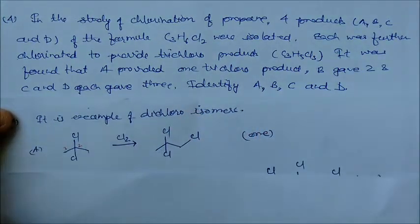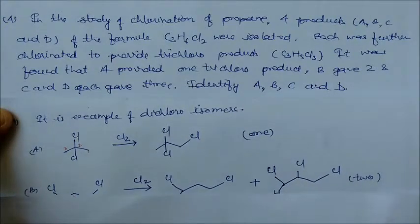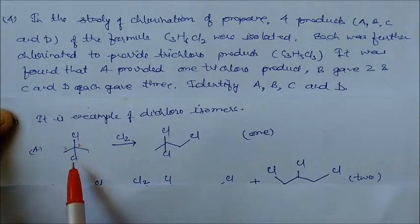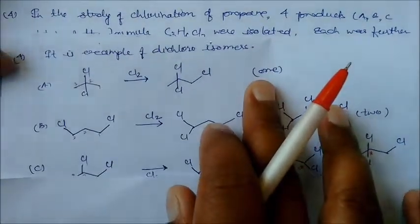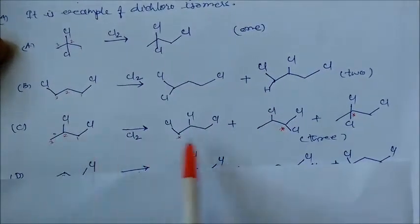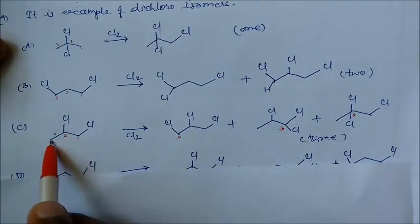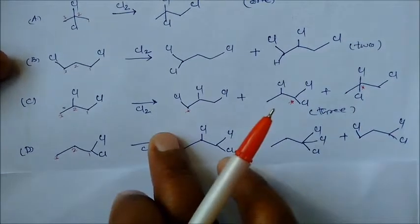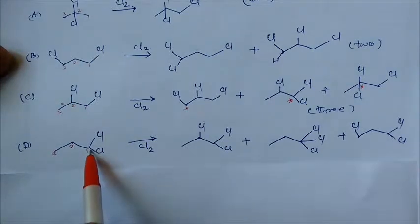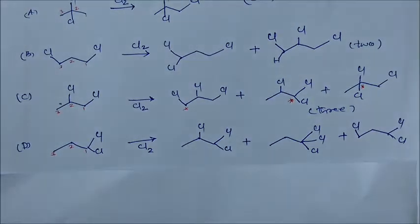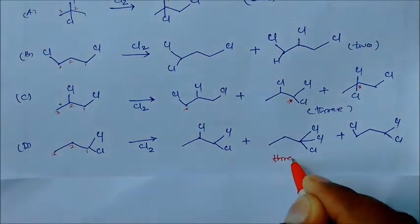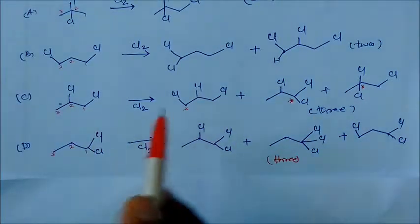Looking at trichloro isomers: if we take the first structure, chlorination gives one product — this is A. The second structure gives two products — this is B. The third structure gives three products — this is C or D. The fourth structure also gives three trichloro products — the other of C or D.